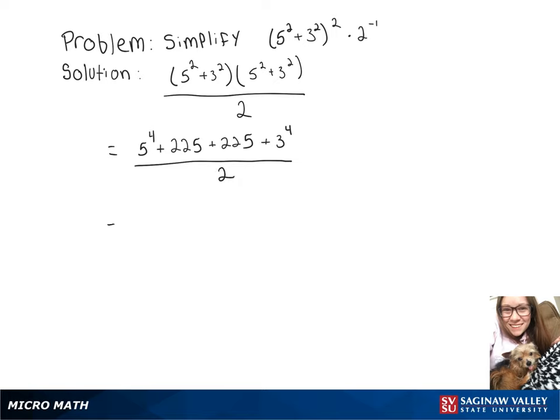Writing that out: 5⁴ gives us 625. We still have plus 225 plus 225 plus 3⁴, which is 81. And again, all that still over 2.